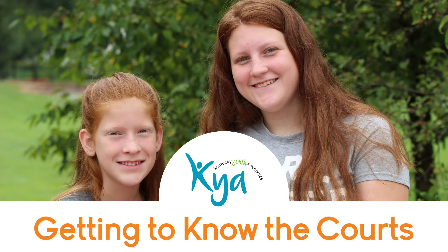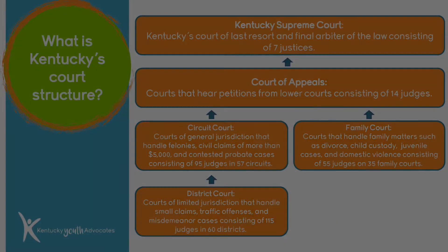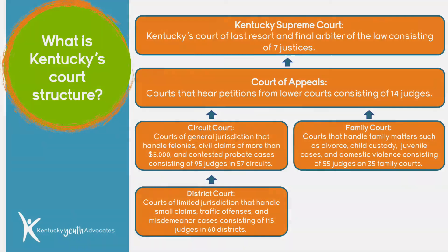So let's start with getting to know the court. What is Kentucky's court structure? If you look at the bottom left, you will see district court. This is the lowest court in Kentucky, and there are courts of limited jurisdiction that handle small claims, traffic offenses, and misdemeanor cases consisting of 115 judges in 60 districts.